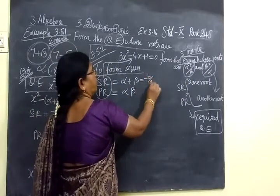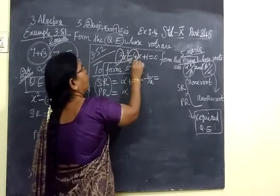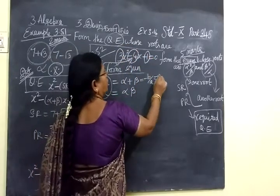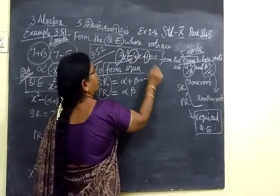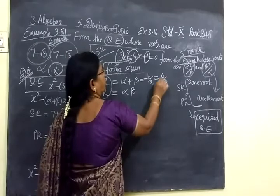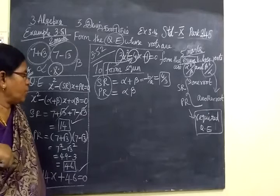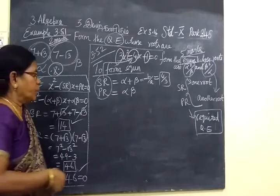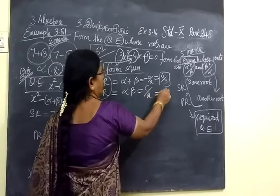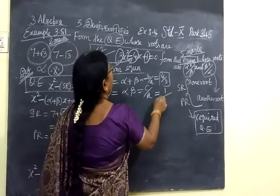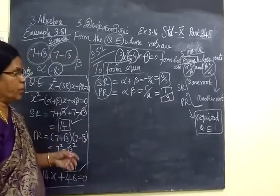So alpha plus beta equals minus B over A equals 4 over 3. The product of the roots, alpha beta, equals C over A equals 1 over 3. These are the sum and product of the roots from the original equation, which we will now use to find the sum and product of the new roots.